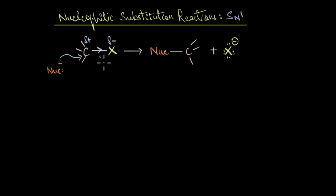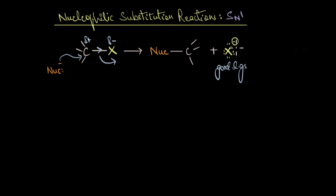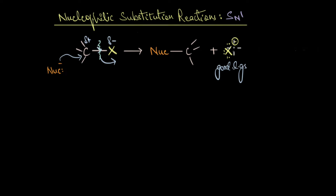Any strong nucleophile or electron-rich species can attack this carbon and eliminate the halogen as a leaving group to form a substituted product. The major driving force for this reaction is that halide ions are good leaving groups. Halogens are highly electronegative, and when the C-X bond breaks, the halogen atom leaves with an electron pair as a halide ion. Because they are highly electronegative, halogens are comfortable holding on to these electrons.